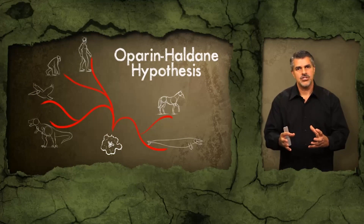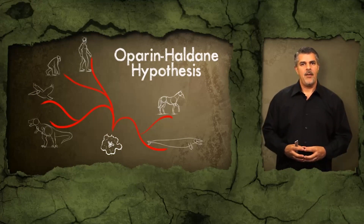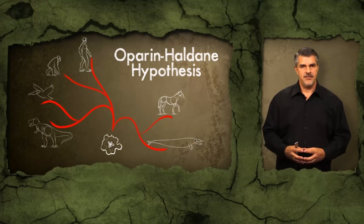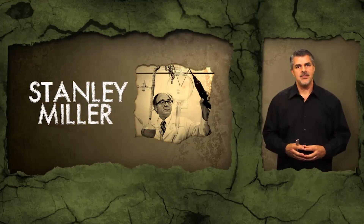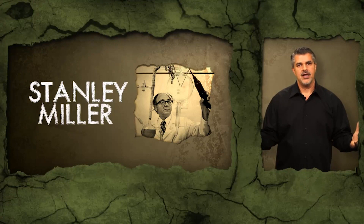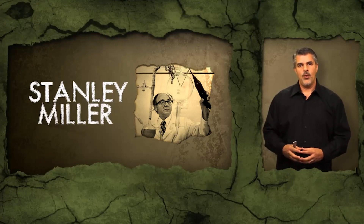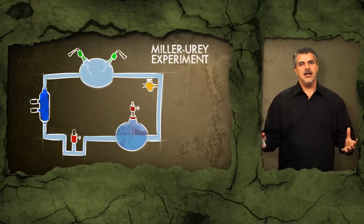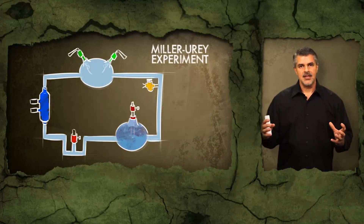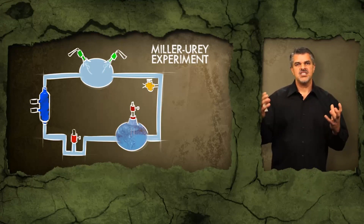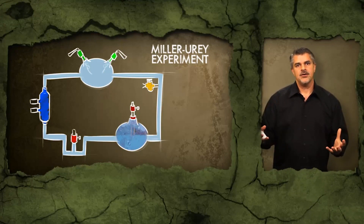Justification for the Oparin-Haldane hypothesis came in the early 1950s when a young graduate student, Stanley Miller at the University of Chicago, did the famous Miller-Urey experiment that shows up in every biology textbook. What Stanley Miller did was assemble an elaborate glass apparatus that was supposed to simulate the conditions of the early Earth.